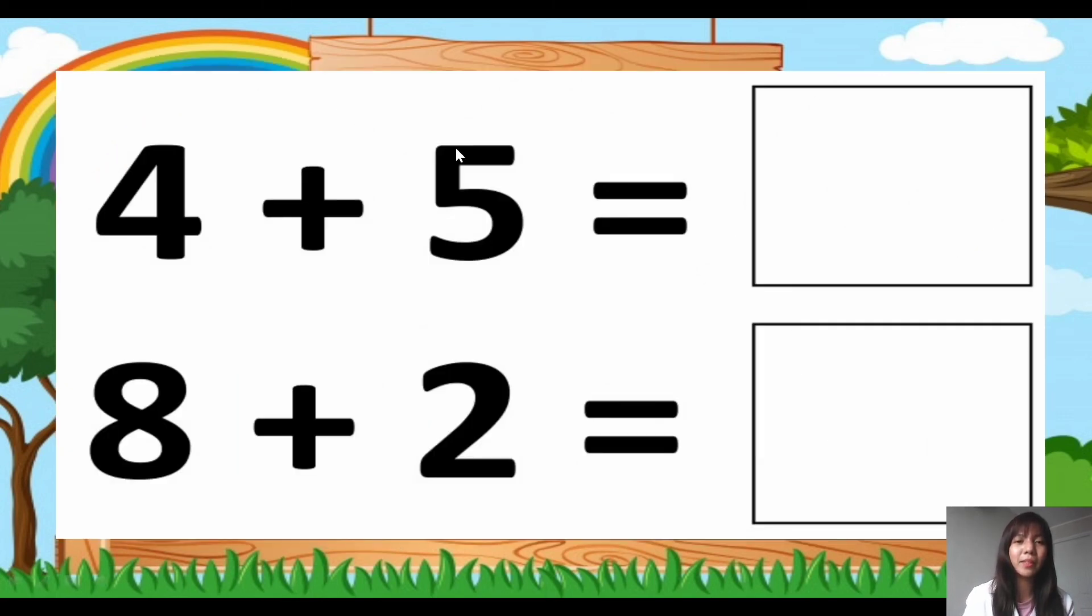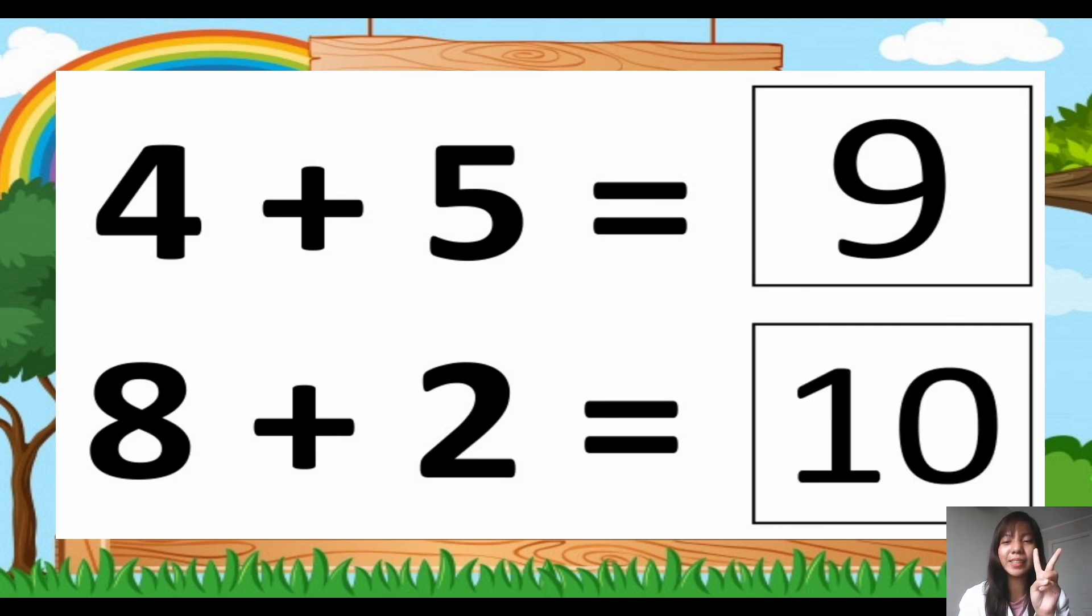So next, another example. This time, it's all about numbers. So 4 + 5 equals. We have 4, and then add 5. 4, 5, 6, 7, 8, 9. So we have 9 as our sum. How about 8 + 2? So we have 8 and we have to add 2 more. 8, 9, 10. So we have 10 as our answer here.